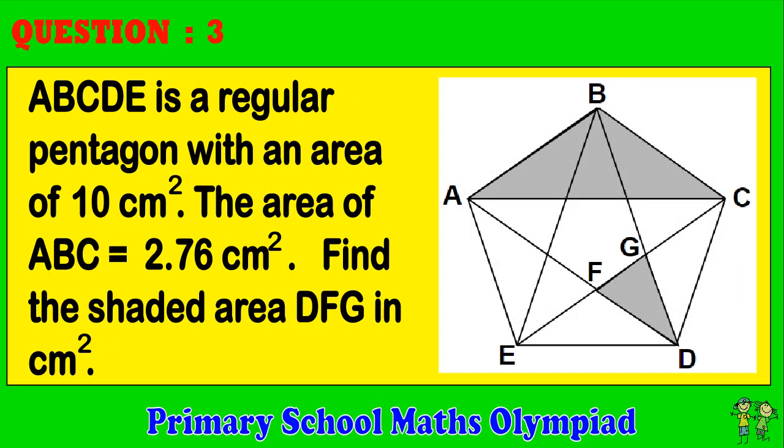Question 3: ABCDE is a regular pentagon with an area of 10 cm². The area of ABC equals 2.76 cm². Find the shaded area DFG in cm².